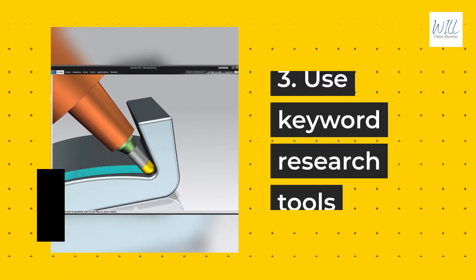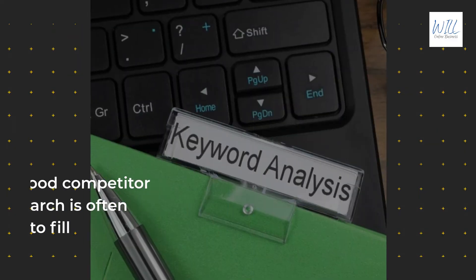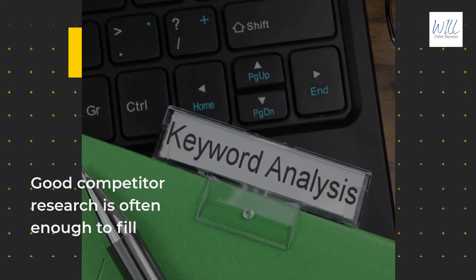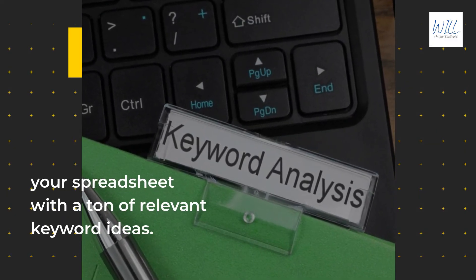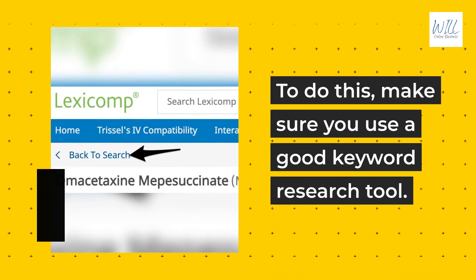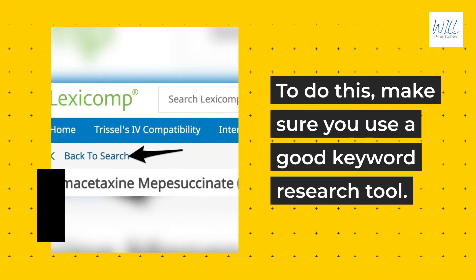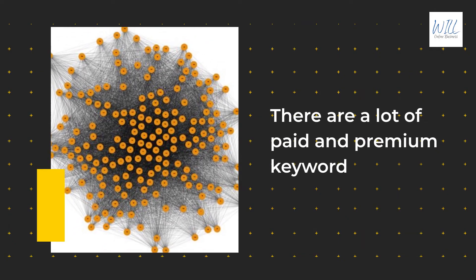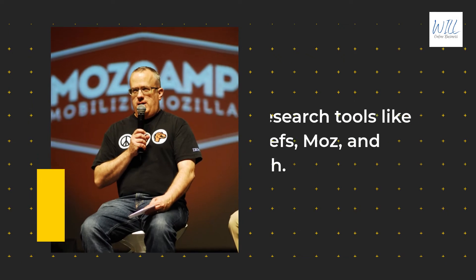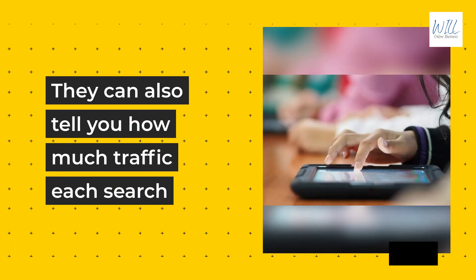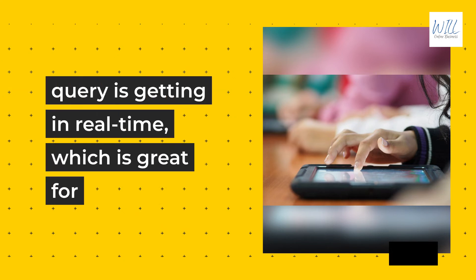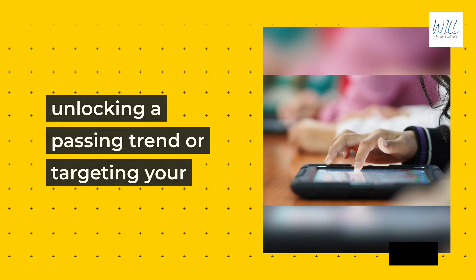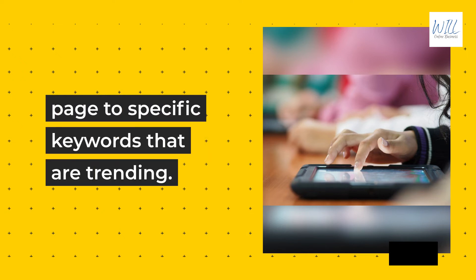Use Keyword Research Tools. Good competitor research is often enough to fill your spreadsheet with a ton of relevant keyword ideas. To do this, make sure you use a good keyword research tool. There are a lot of paid and premium keyword research tools like Ahrefs, Moz, and SEMrush. They can also tell you how much traffic each search query is getting in real-time, which is great for unlocking a passing trend or targeting your page to specific keywords that are trending.